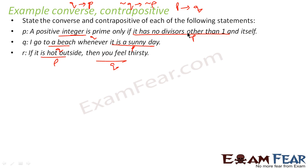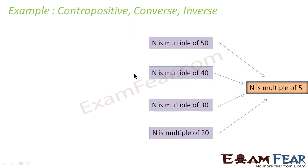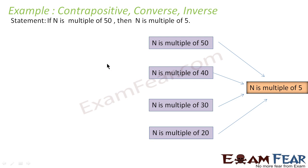Very simple. You just have to find P and Q and then use the formula. For converse, it is Q implies P; for contrapositive, not Q implies not P. Let's take the statement: if n is a multiple of 50, then n is a multiple of 5. To find the contrapositive, the form is not Q implies not P — that means if n is not a multiple of 5, then n is not a multiple of 50.